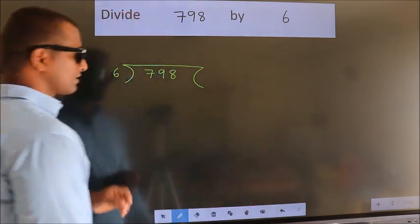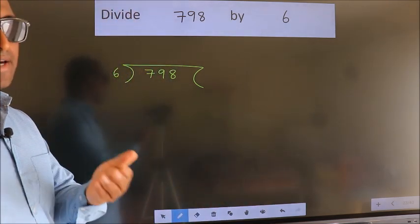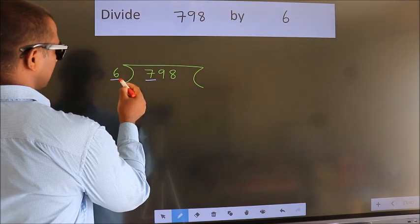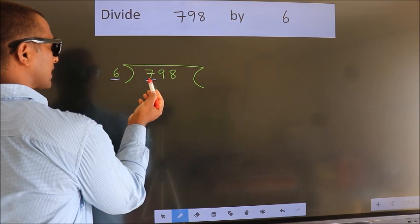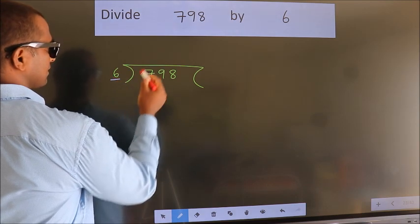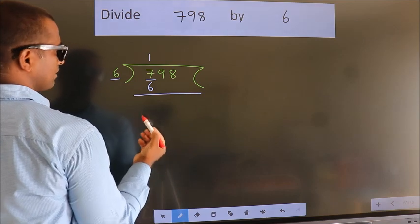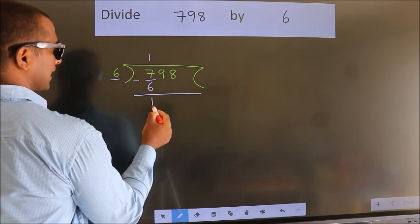This is your step 1. Next. Here we have 7. Here 6. A number close to 7 in 6 table is 6 once 6. Now we should subtract. We get 1.